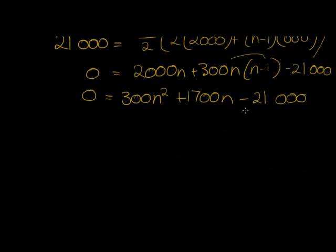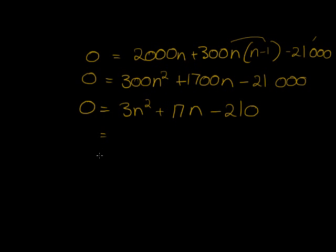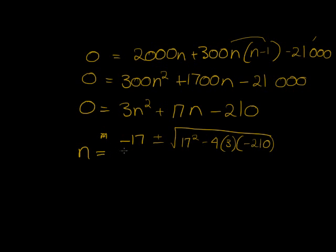There are way too many zeros. I can divide everything with 100. So every term, 0 divided by 100 is 0. 300 divided by 100 is 3N squared plus 1,700 divided by 100 is 17N minus 21,000 gives me 210. So I'm not going to try this in brackets. It's possible. I'm just going to use my formula. I think it's just more fail safe and quicker. N equals negative 17 plus or minus the square root of 17 squared minus 4 times 3 times negative 210. Everything divided by 2A which is 2 times 3 is 6.